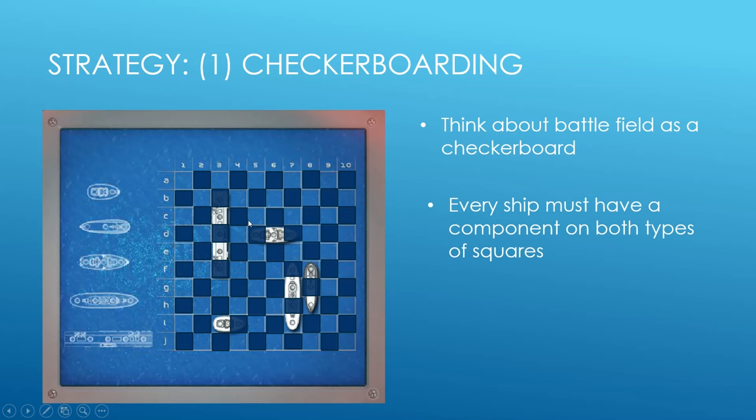The reason we would want to do this is that every ship must have components on both types of squares. So by only firing on either light or dark squares, we're not going to miss any ships completely. What this does for us is eliminate half the places we have to fire. That's really good from a probabilistic standpoint - we just increase our odds by almost two times because we're eliminating half of the squares.